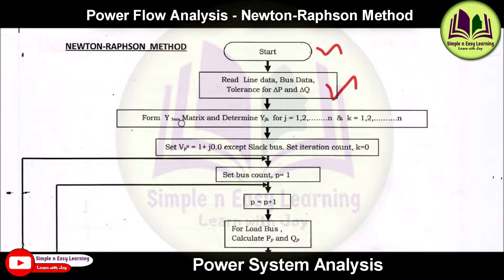The next step is to form the bus admittance matrix, or Y-bus matrix, then determine the parameters where j varies from 1 up to the number of buses, and similarly k varies from 1 to the number of buses n.